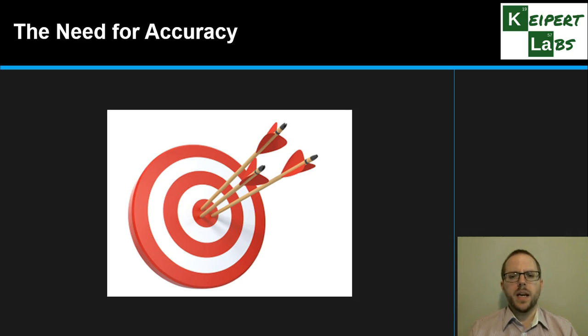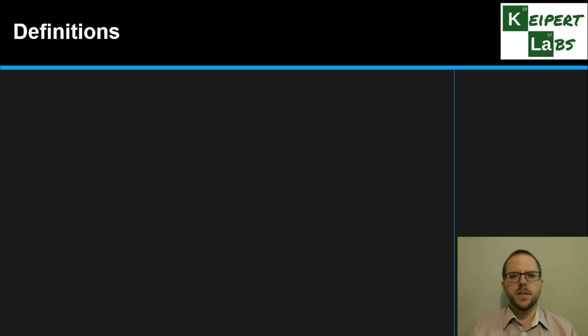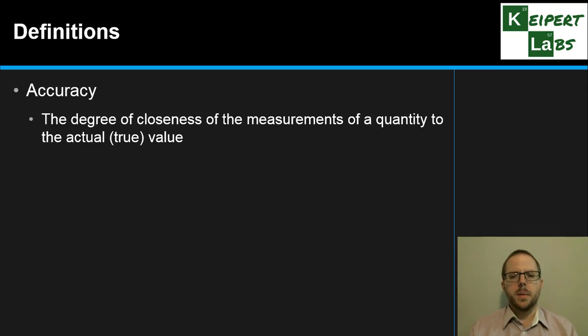So we're going to be considering two main areas that we as forensic scientists need to address: accuracy and contamination.